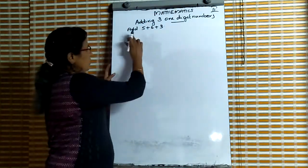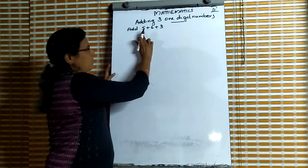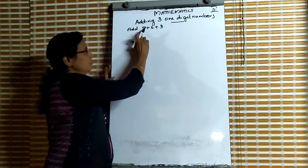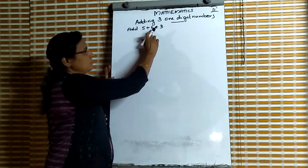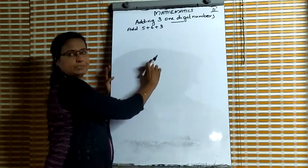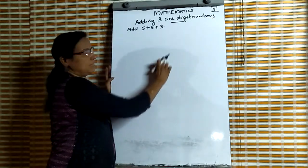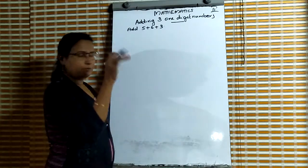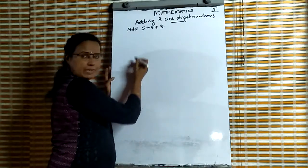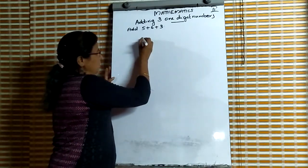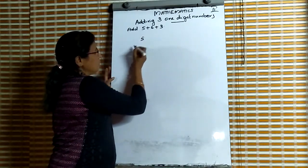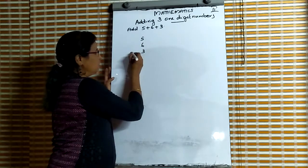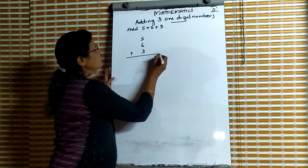First question. We have to add 5 plus 6 plus 3. Here 5 is a one-digit number, 6 is a one-digit number, 3 is a one-digit number. We have to add these three. First we write one below other: 5, 6, 3. Then put plus.